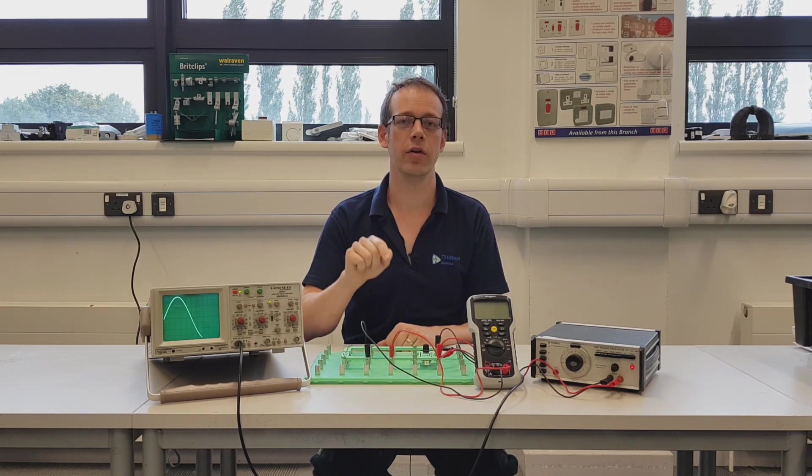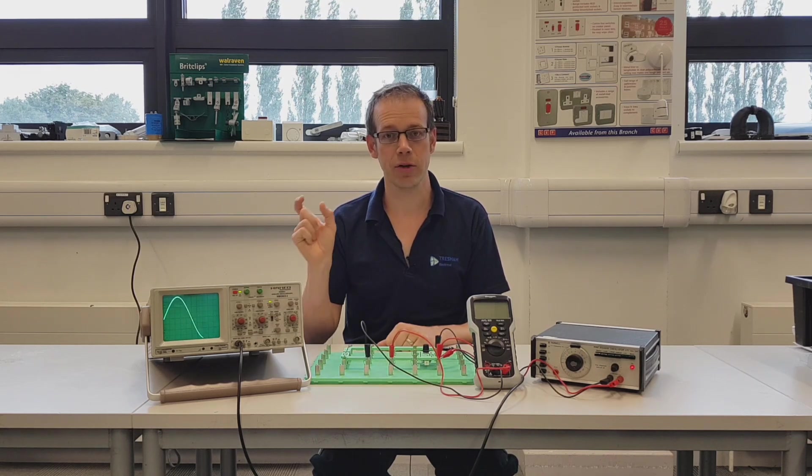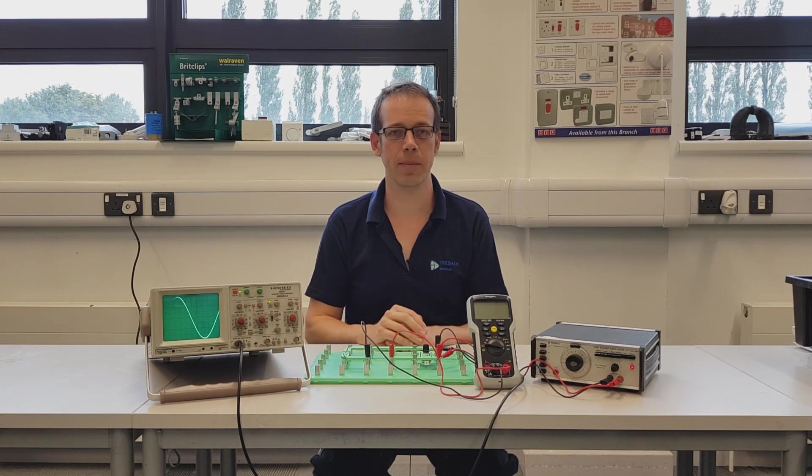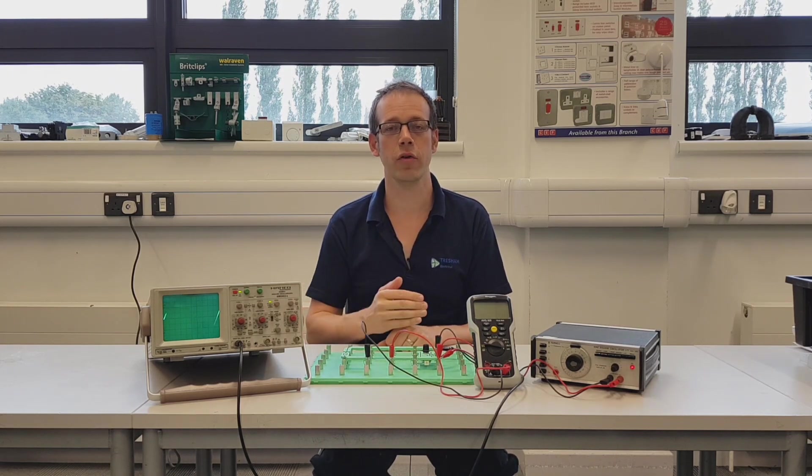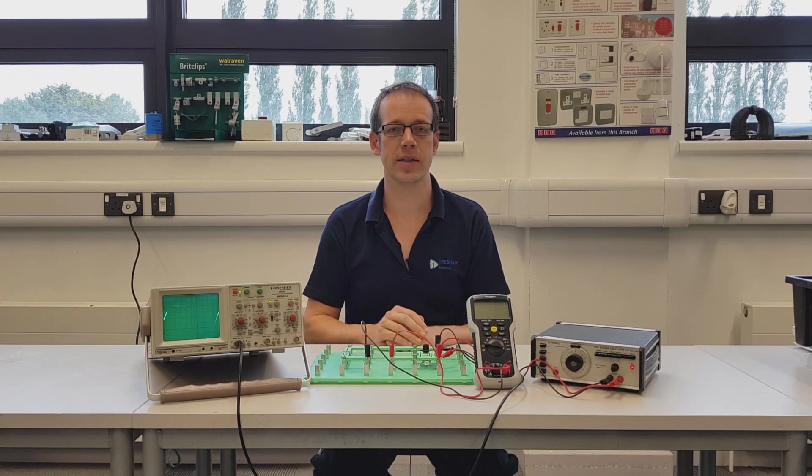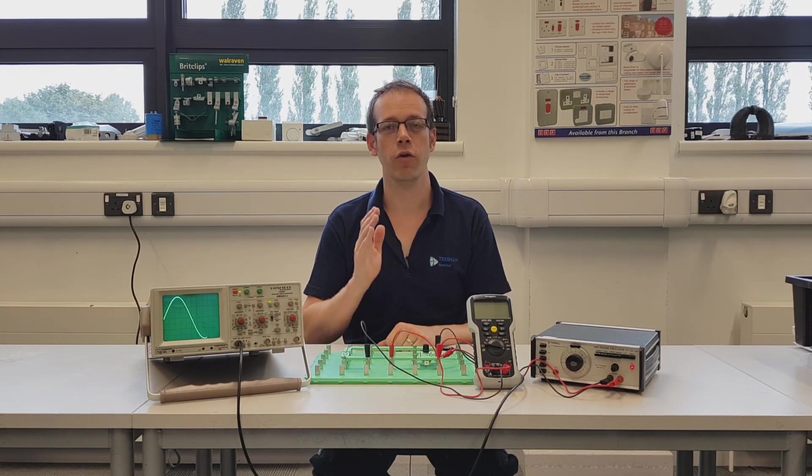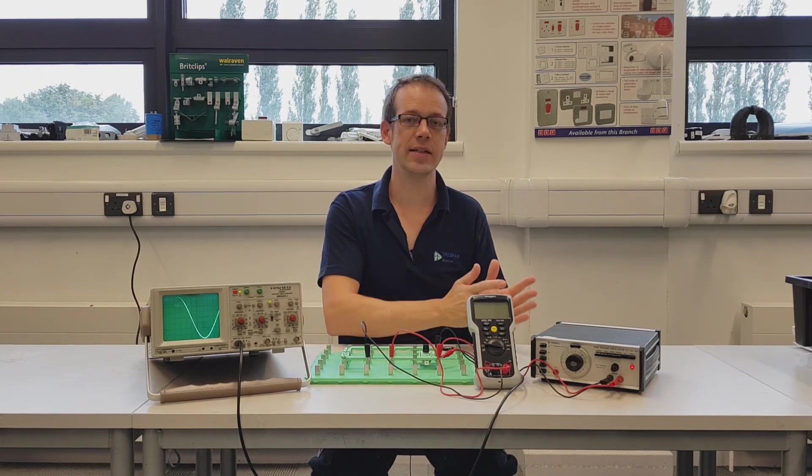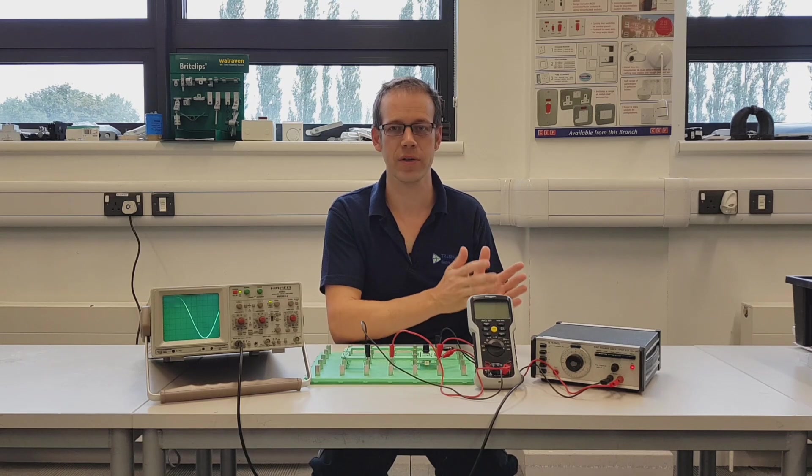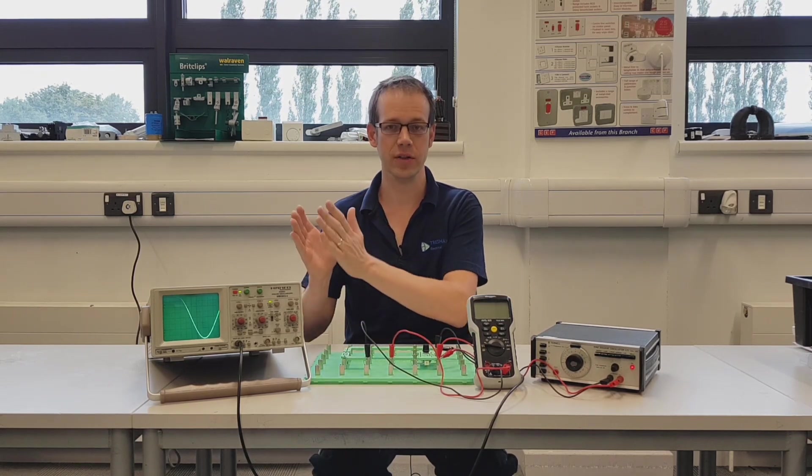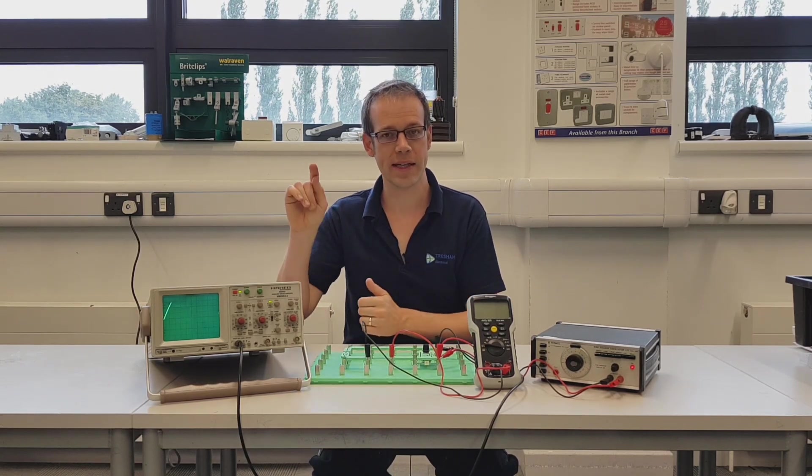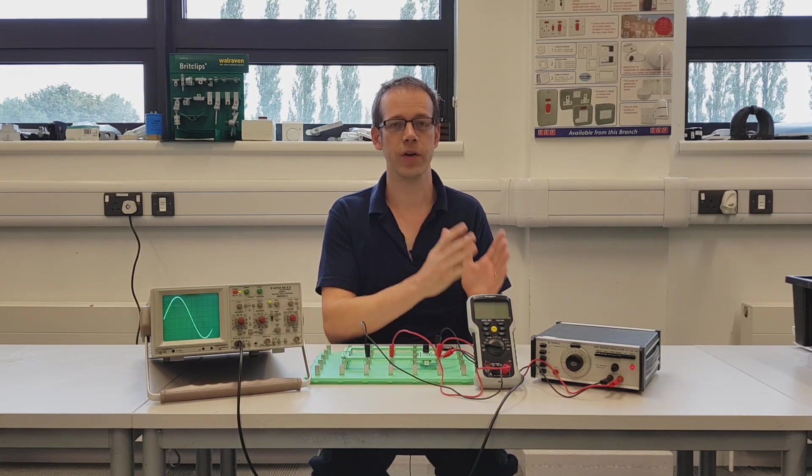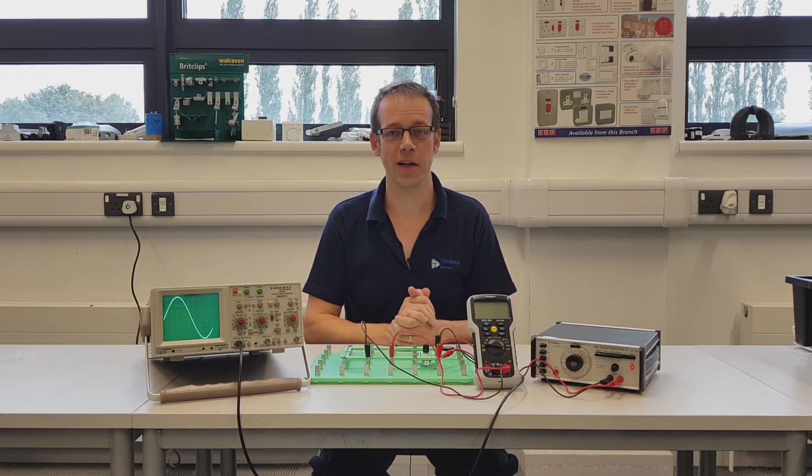That formula is really important and you may be expected to do some calculations with that in your exam, so try and get that down on a formula sheet, get it into your memory so that when you sit your exam you've got it there ready to go. Remember: if we increase the frequency in an AC circuit it increases the inductive reactance, in other words it makes it harder for current to flow. And if we increase the inductance in the coil, if we increase L, it will also increase inductive reactance thereby making it harder for current to flow around the circuit. Thank you very much for watching.